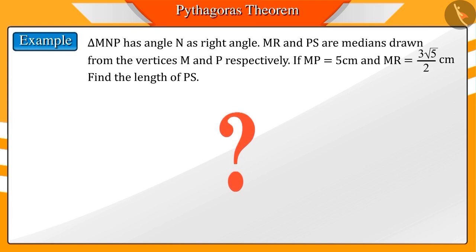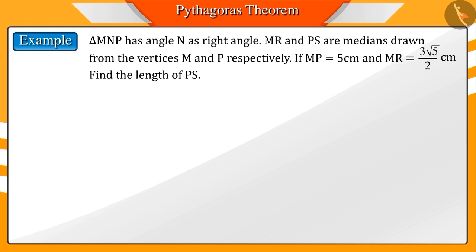Absolutely correct. First of all, we will draw a figure based on the information given in the question. So let's draw. From the question, we know that the triangle is a right-angled triangle, so we draw a right-angled triangle